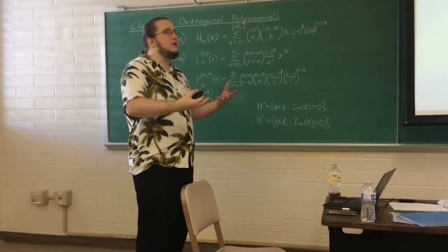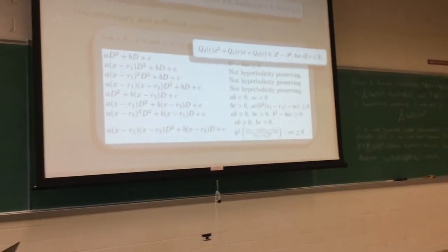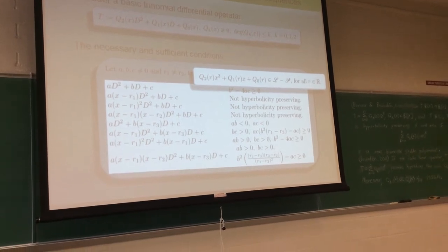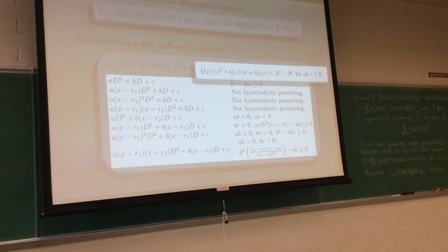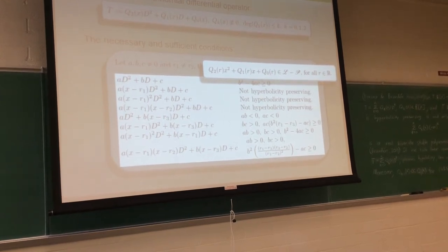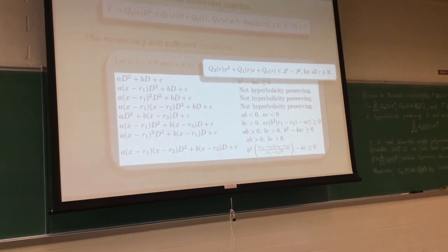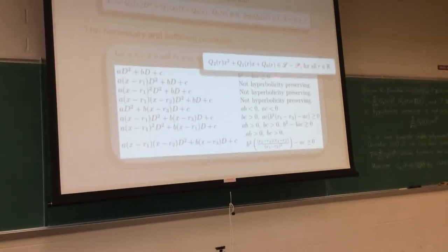Is there a comprehensive way to put all these conditions under one heading? Yes. If you take each Q_k and substitute an r inside those polynomials, and the resulting polynomial is in the Laguerre-Pólya class, then that condition is equivalent to all of these at once. We can unify all cases by returning to the Laguerre-Pólya class: if we can show this is in LP for all r, that shows the original operator is hyperbolicity preserving — bringing LP back after it went missing in several recent theorems.